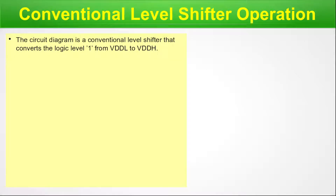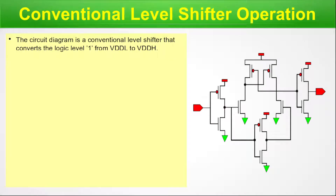Before proceeding further, we will demonstrate how a basic level shifter operates — that is, how it changes a voltage level from VDDL to VDDH. On the left-hand side we will go through the text and on the right-hand side the corresponding circuit diagram. The circuit diagram is a conventional level shifter that converts the logic level 1 from VDDL to VDDH. The circuit contains only PMOS and NMOS with one input port and one output port.